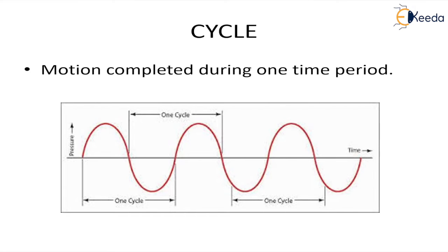Cycle is basically the motion completed during one time period. This motion is the movement of a vibrating body from equilibrium position to one extreme position in one direction, then back to the equilibrium position, then to the other extreme position in another direction, then back to the equilibrium position. That is called one cycle of vibration.